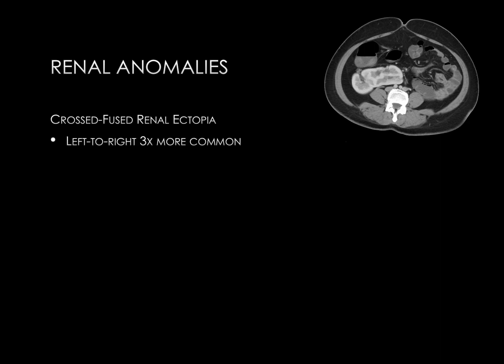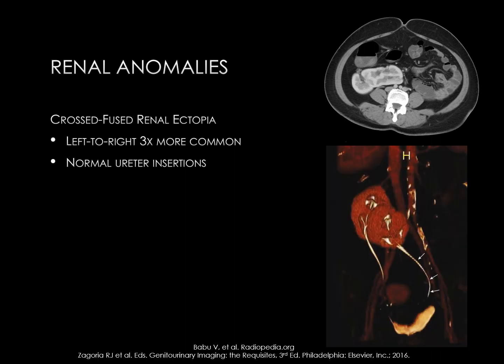The left kidney crossing to the right side is actually three times more common. These patients also have normal ureter insertions, as indicated by the right lower image, which is a three-dimensional reconstruction from an excretory phase CT. You can see the kidneys fused in the right mid-abdomen, but with normal ureter insertions at the lateral aspects of the bladder.